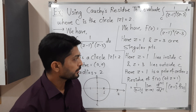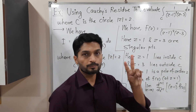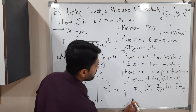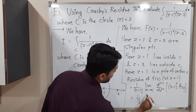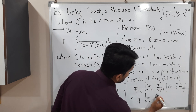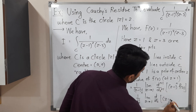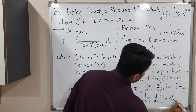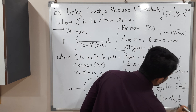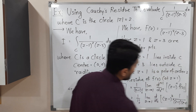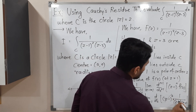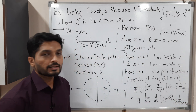Since n equals 2, we substitute: 1 over (2 minus 1) factorial, limit Z tends to 1, first derivative of (Z minus 1)² times f(z). Our f(z) is 1 over (Z minus 1)²(Z minus 3). The (Z minus 1)² terms cancel each other, leaving the derivative of 1 over (Z minus 3).